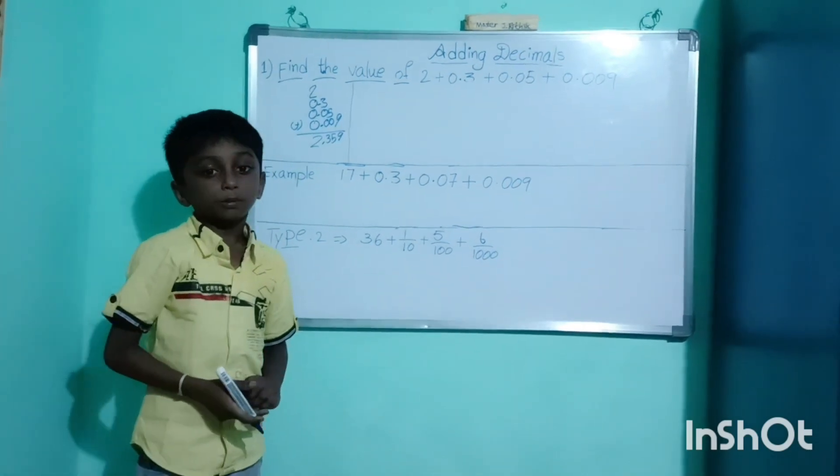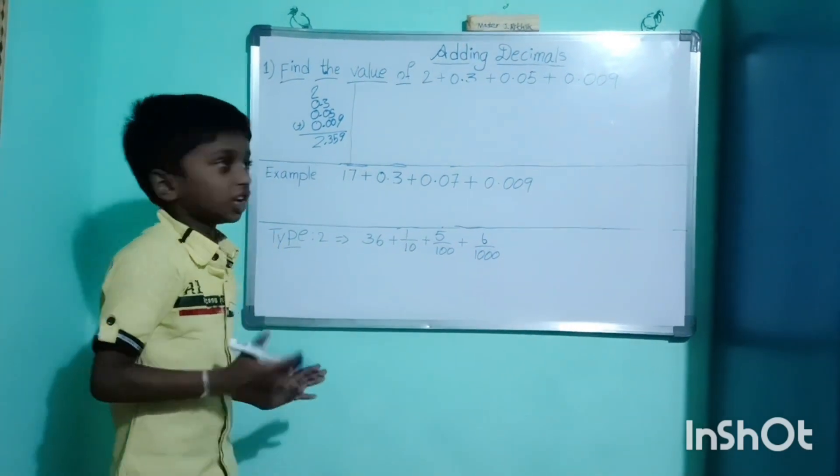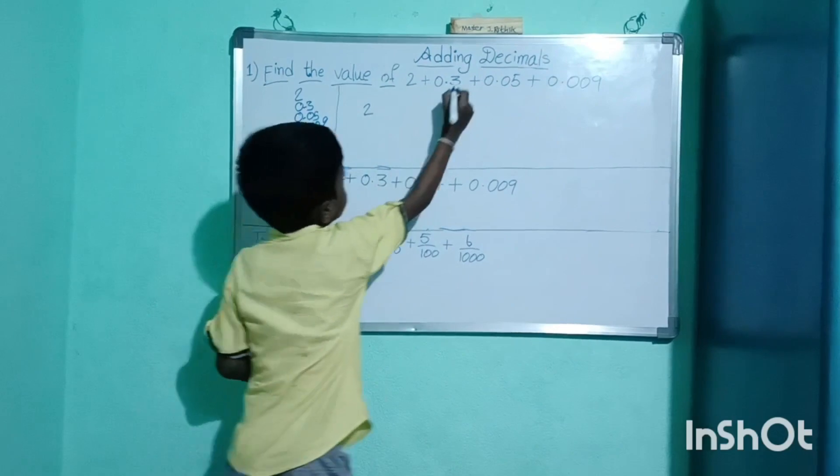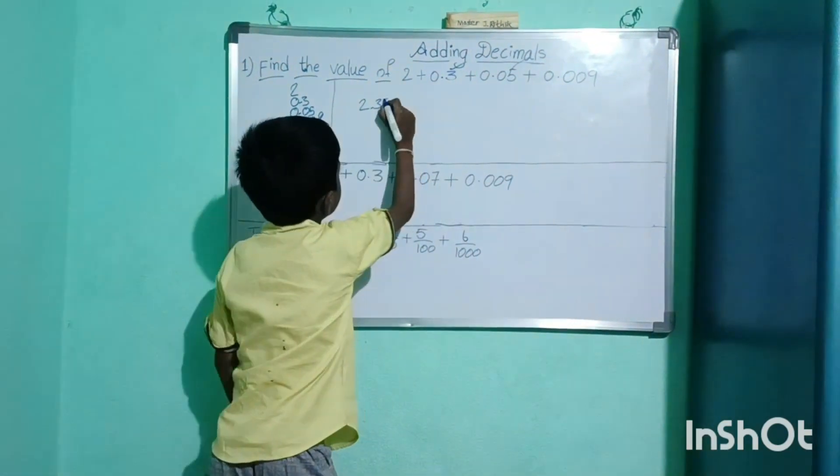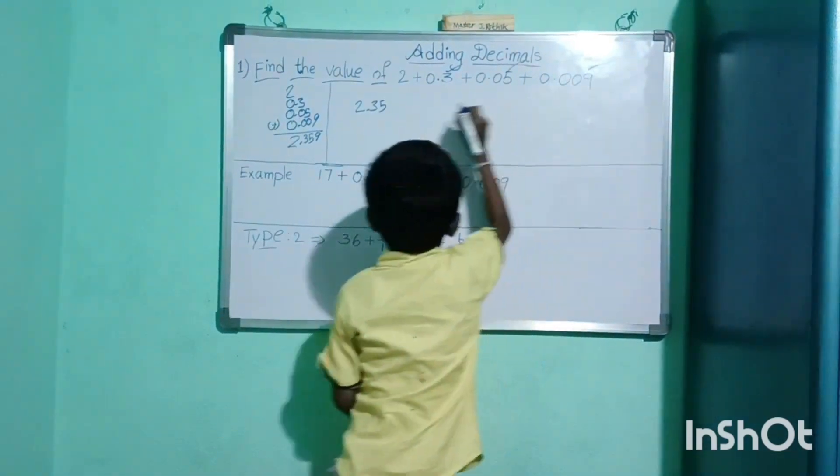We will follow smart process that is 2.359.